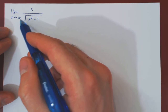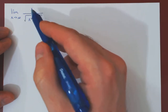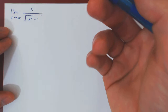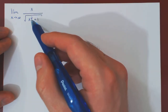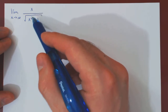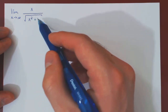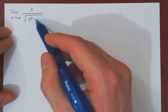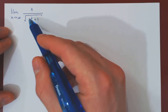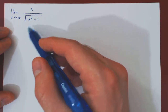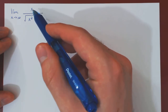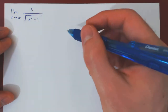As x tends to infinity, we have a ratio of two functions. The biggest term on top is x, as it is the only term. On the bottom, when x tends to infinity, x squared is way bigger than the plus one, so the plus one doesn't really matter. What we have on the bottom is roughly the root of x squared, which is also x. So this limit should be equal to x over x, which is one.